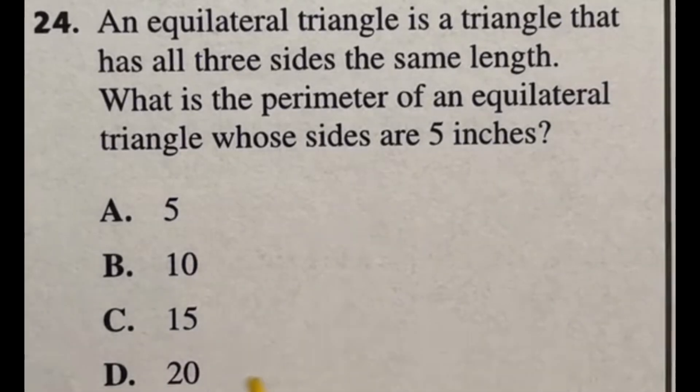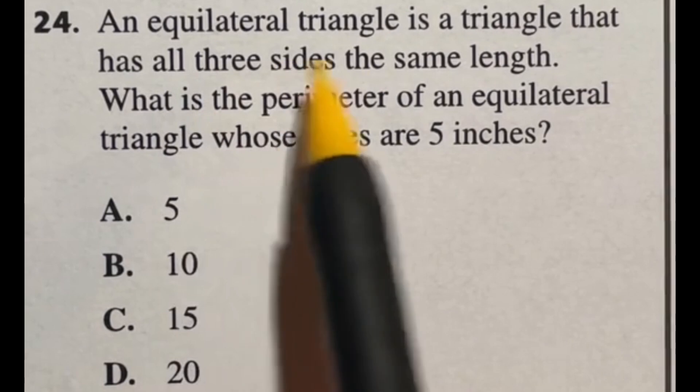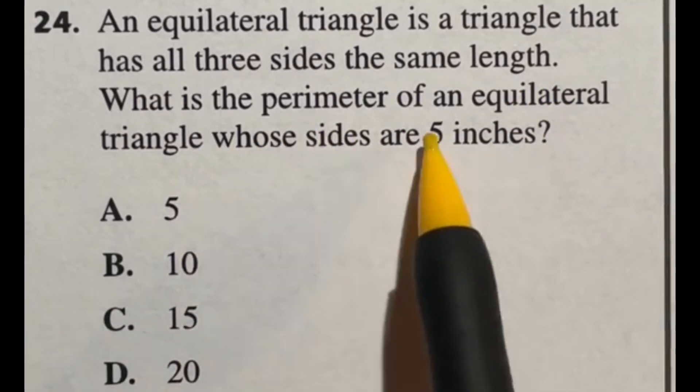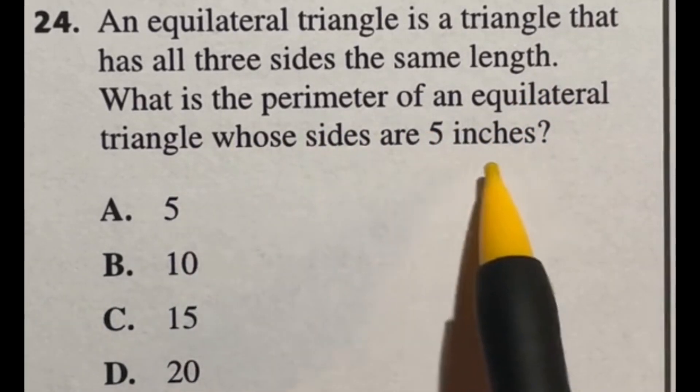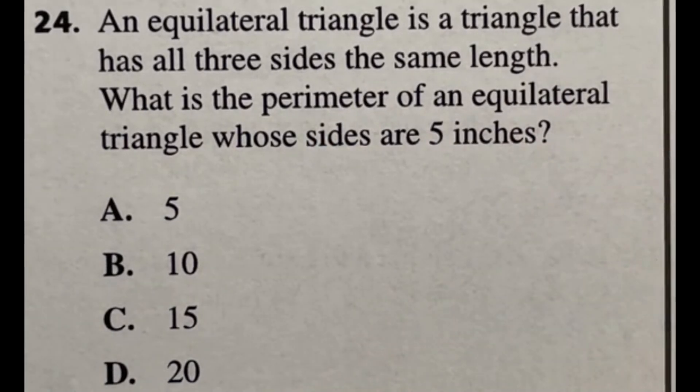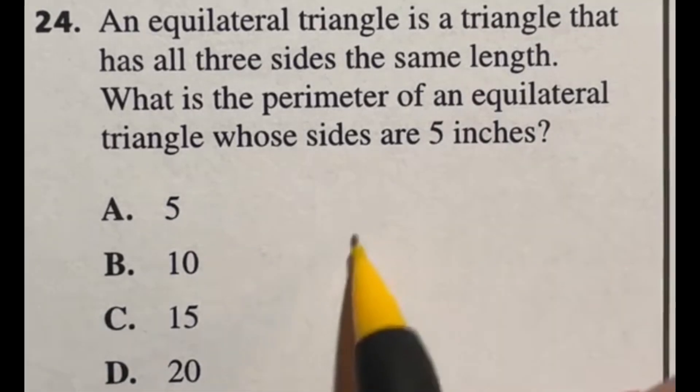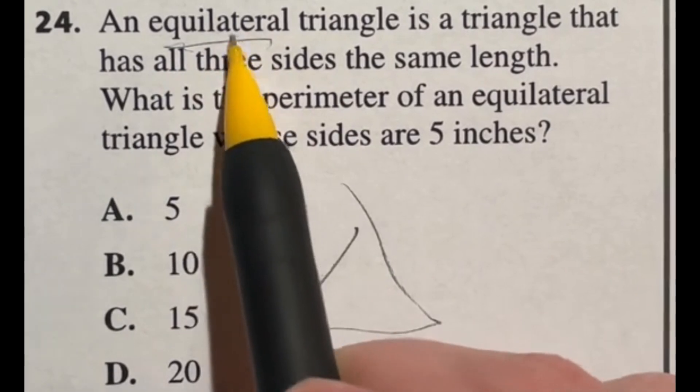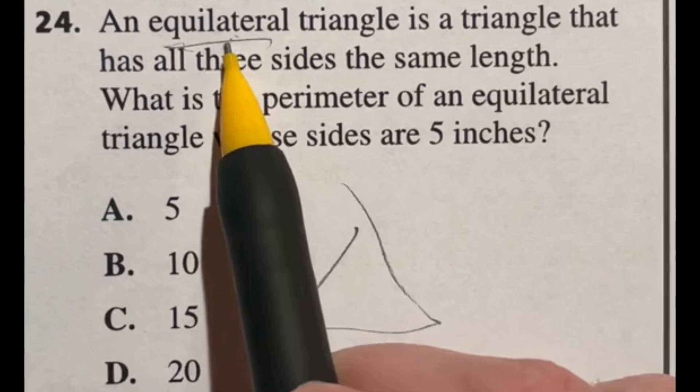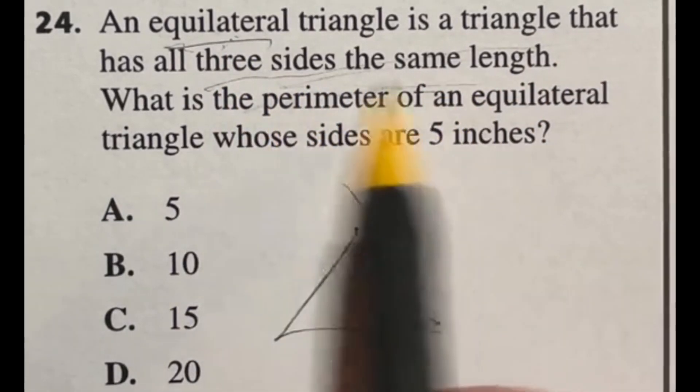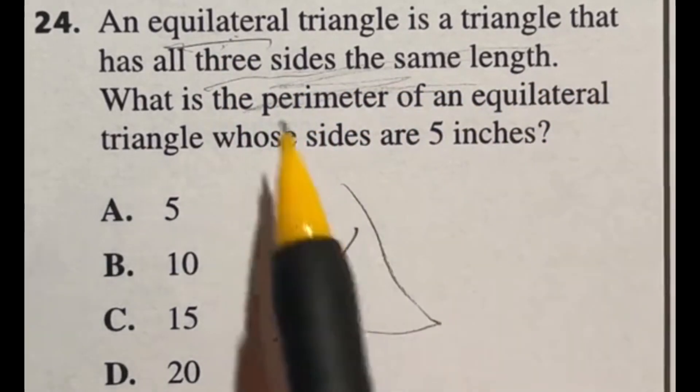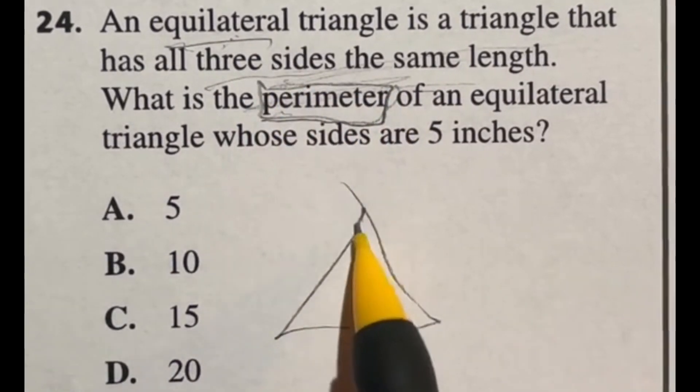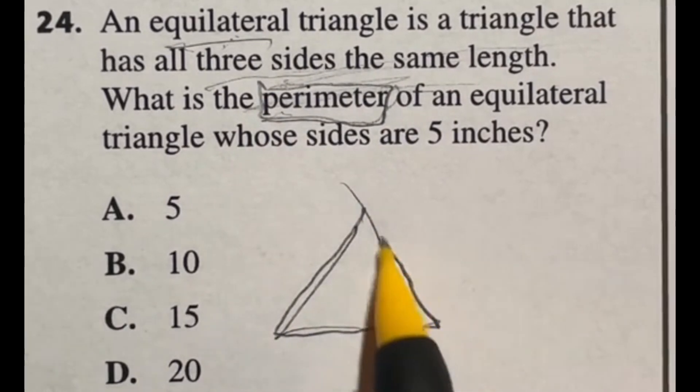Number 24 should be one of the easiest you have on this test. It says an equilateral triangle is a triangle that has all three sides the same length. What is the perimeter of an equilateral triangle whose sides are 5 inches? So in this case we have this triangle, it's equilateral and usually they would expect you to know that equilateral means that all three sides are the same. In this case though they actually told it to you so there's no reason for you to get this wrong. Now the one thing you may have forgotten is what does the word perimeter mean? Remember perimeter just means the distance around the outside.